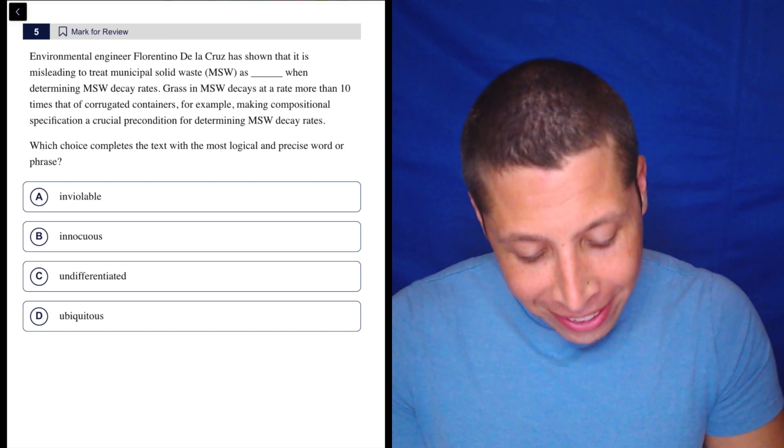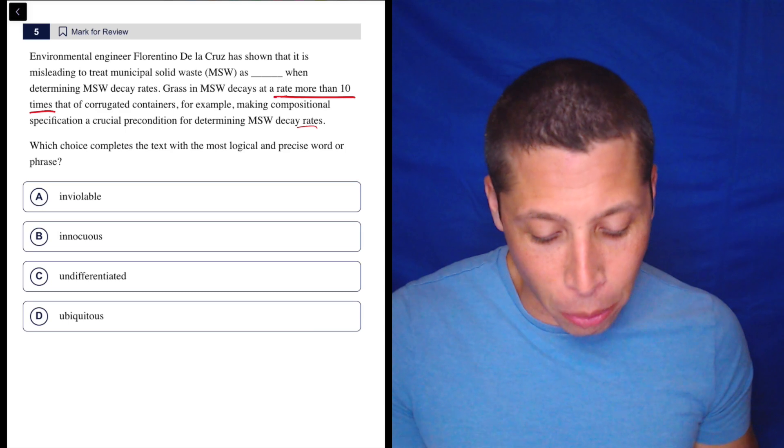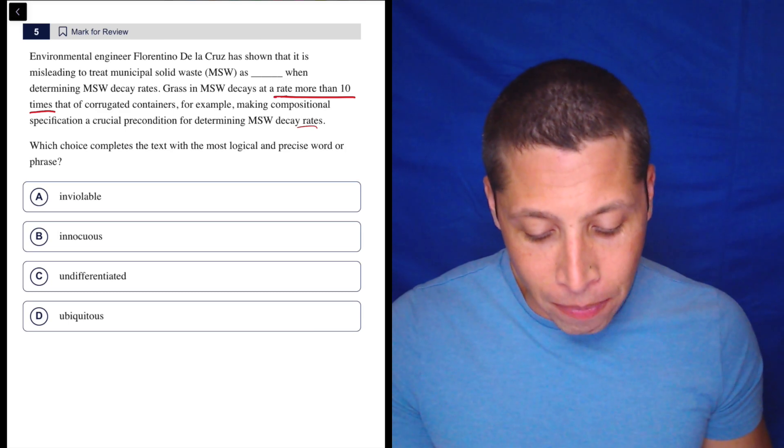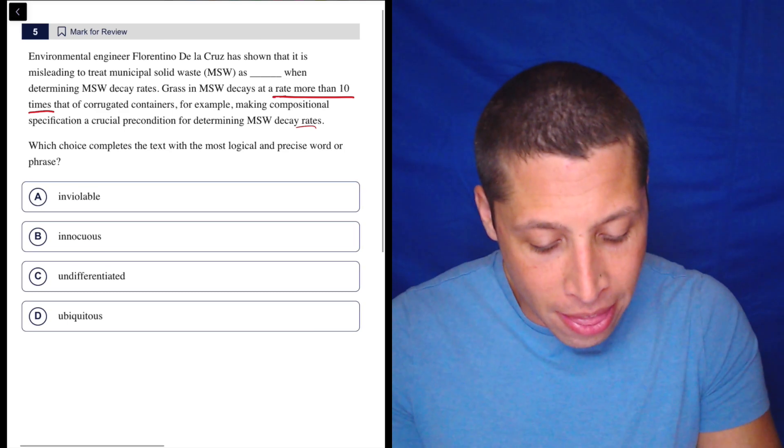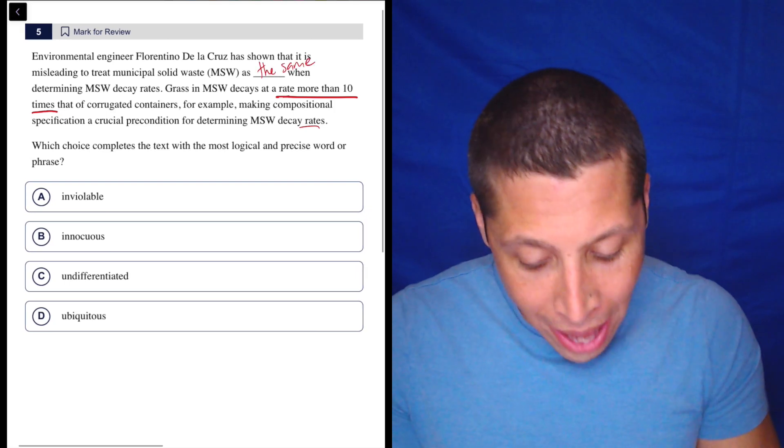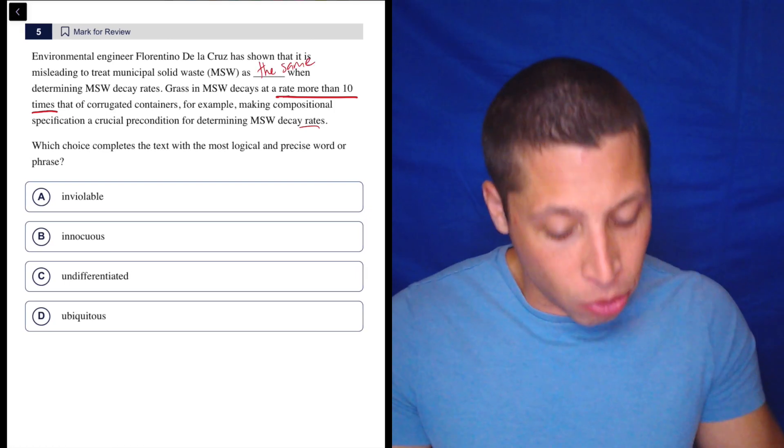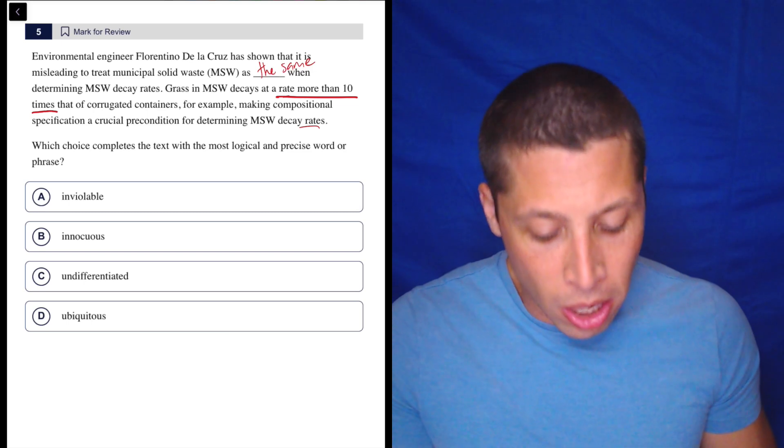So basically the rates are different, right? This one decays at a rate more than 10 times that of corrugated containers. So it is misleading to treat municipal solid waste as the same. Let's try to dumb summary this. When determining the rates because grass decays at a rate more than 10 times that of corrugated containers, for example,